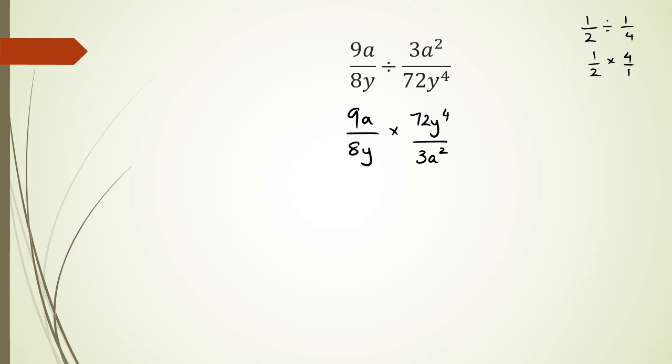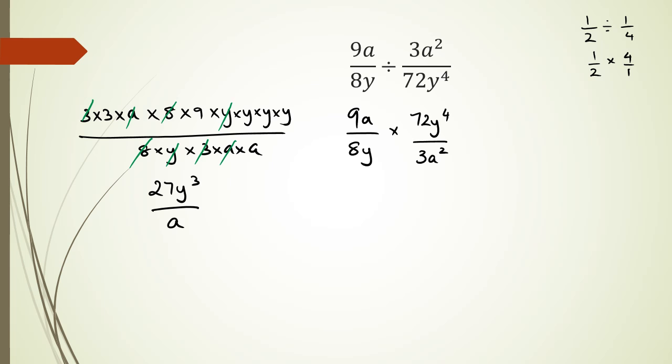So doing this the long-winded way, which is expanding everything out. So I'm going to have 9 as 3 times 3 times a. 72 can be written as 8 times 9 times y to the power of 4. And the whole thing divided by 8 times y times 3 times a times a. So canceling things out, I've got two 3s get rid of each other. The 8s have gone, the ys have gone, and 1a has gone here. Which means in the numerator, I've got 27y cubed divided by 1 positive a.